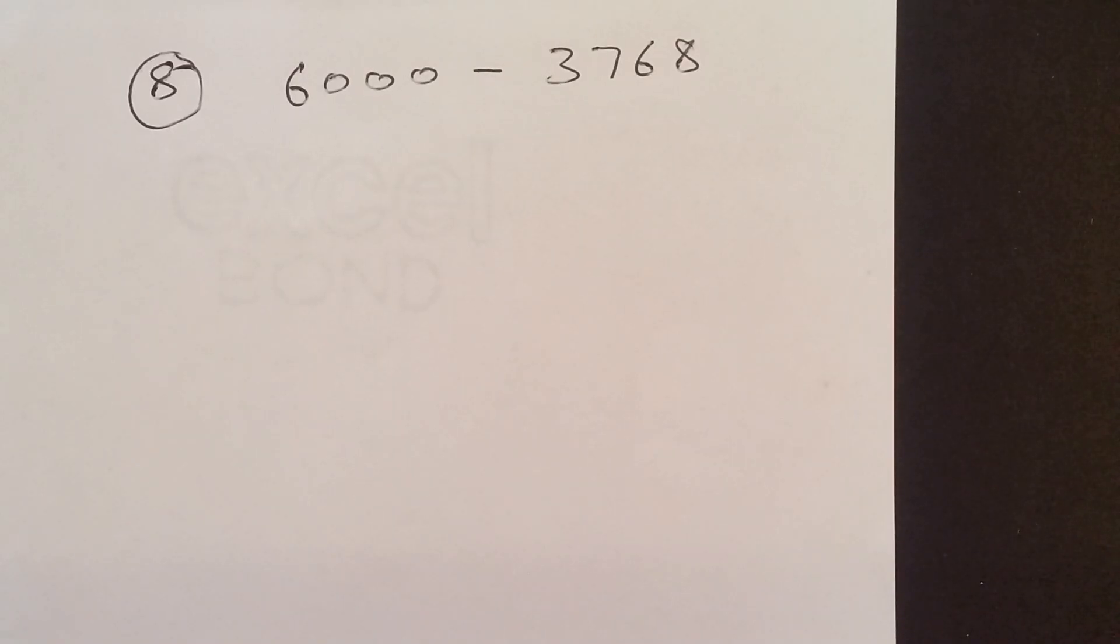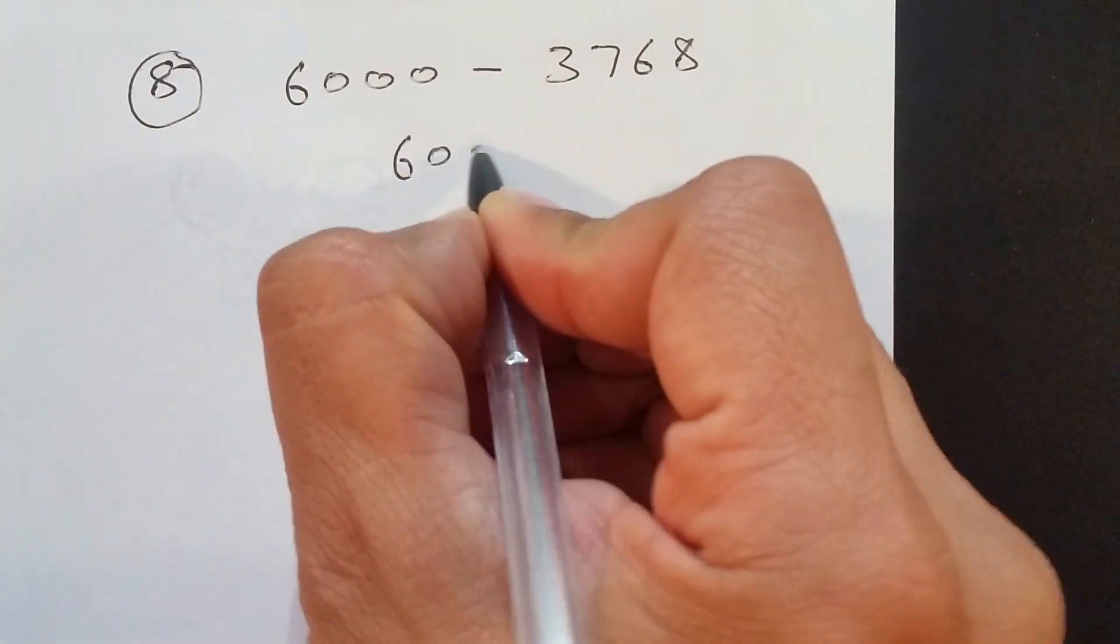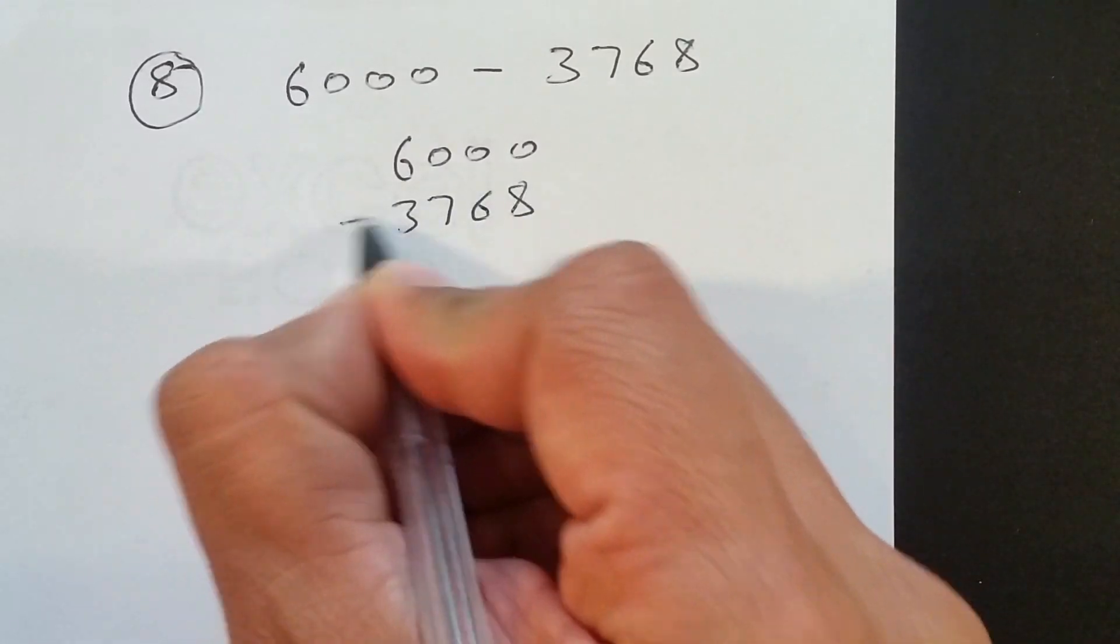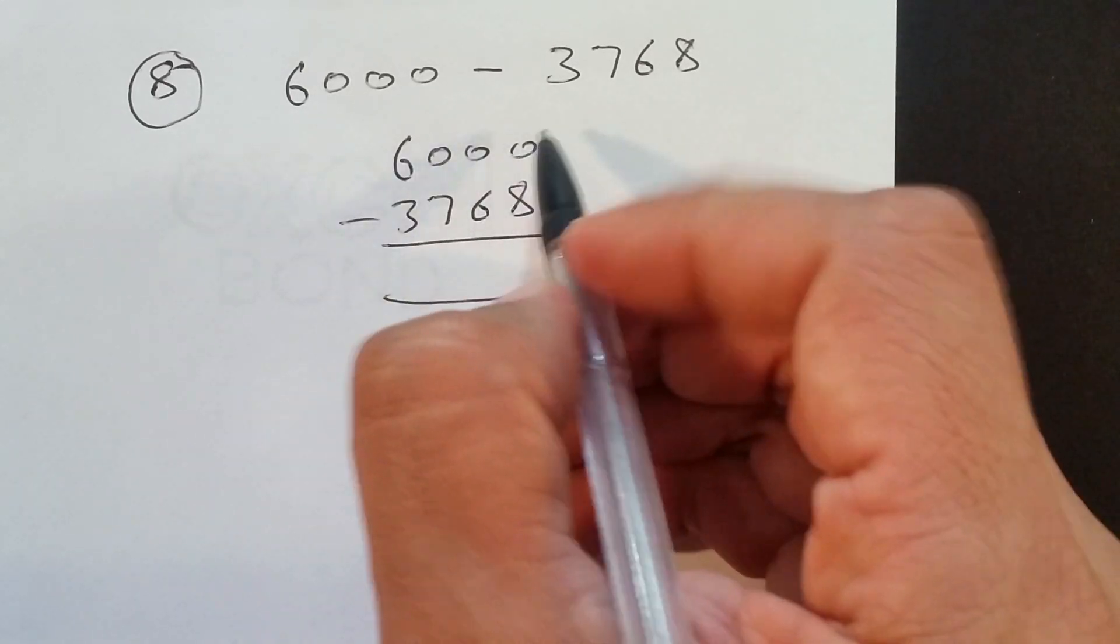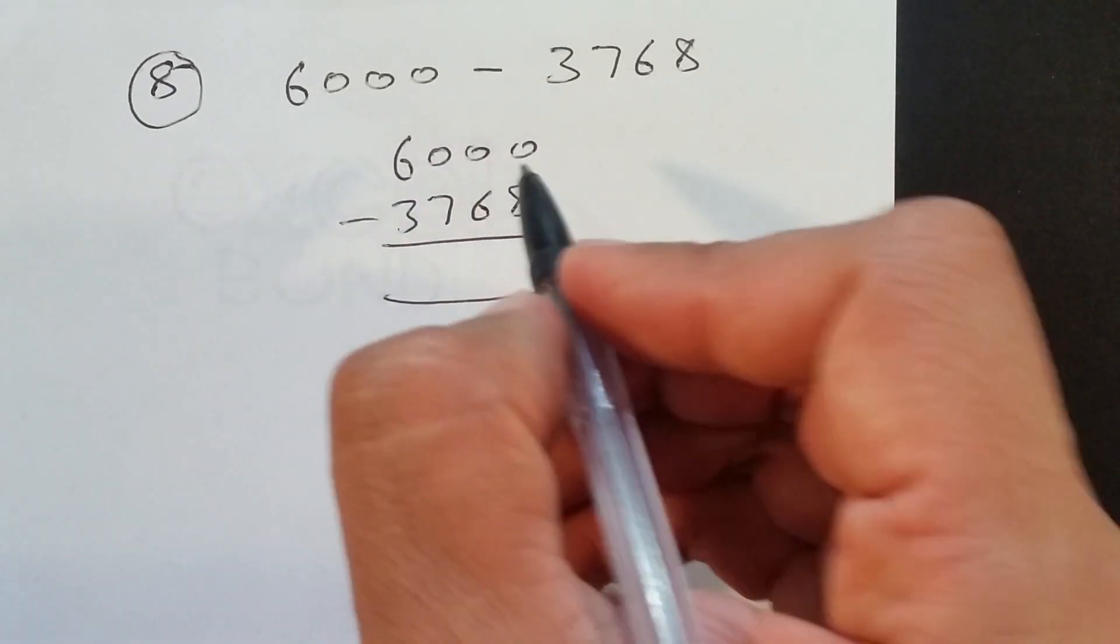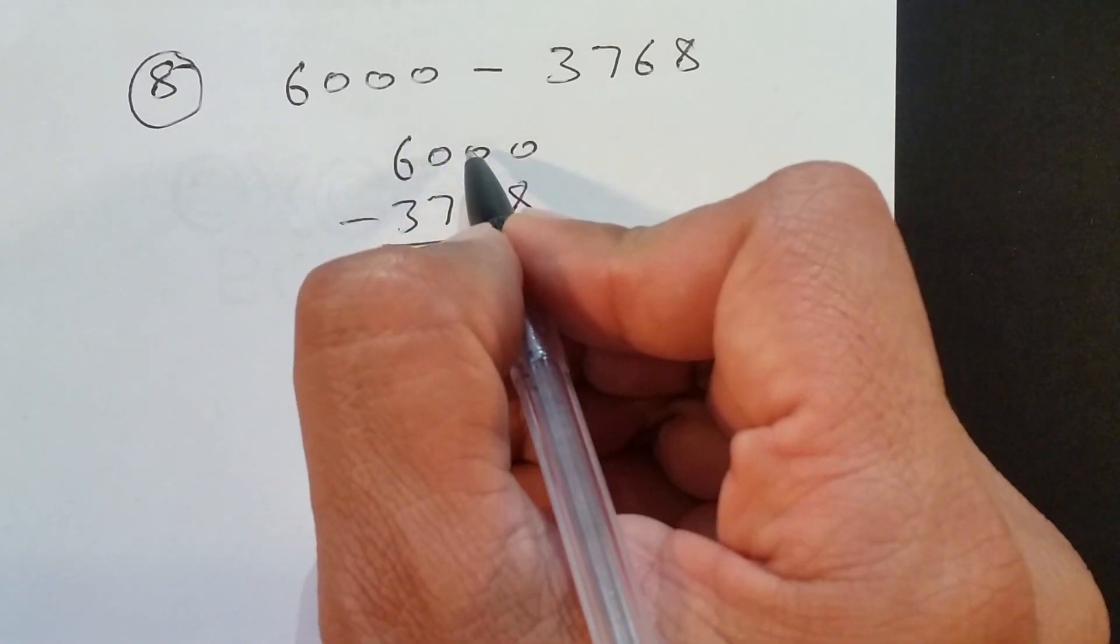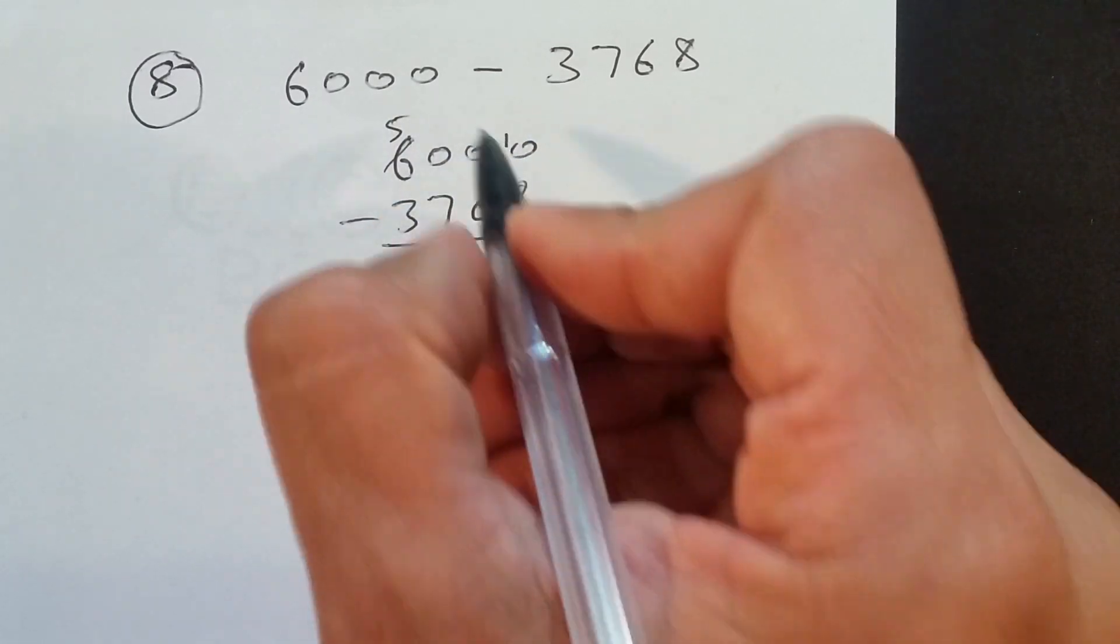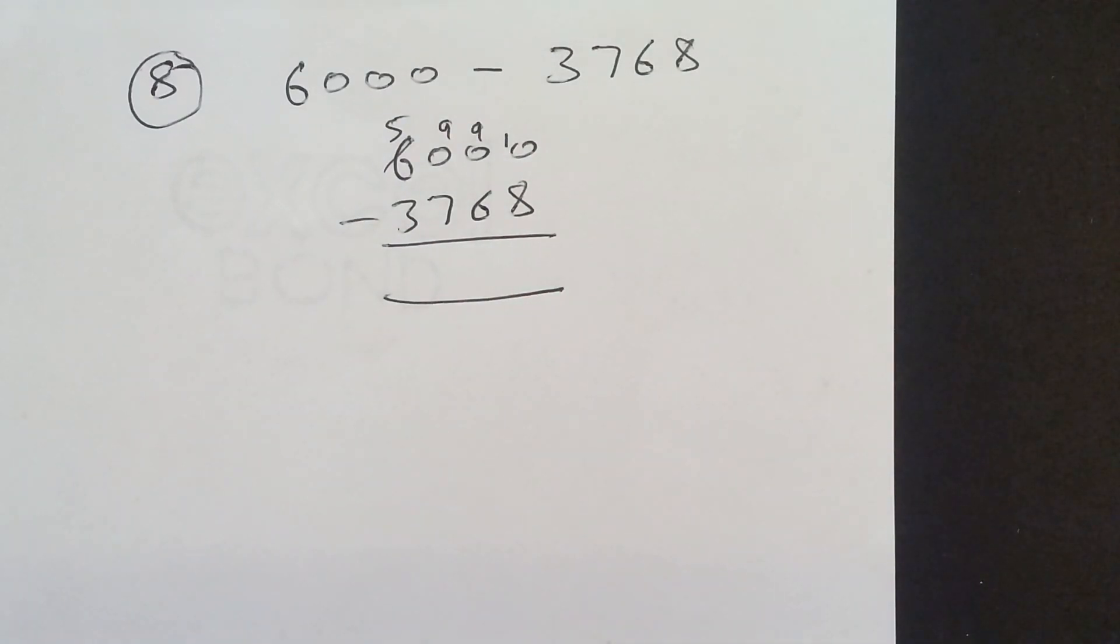Another subtraction question. 6000 minus 3768. So, we'll add exactly the same thing like 6000. 3768. The reason I picked that because of the zeros. Just want to give a bit more information on that. So, as I said in my previous question, the last zero, we borrow it from. We can't borrow it from here. Can't borrow it from here. We borrow it from here. That will become 5. The last zero will become 10. And all the zeros will become 9. That's a very important thing.